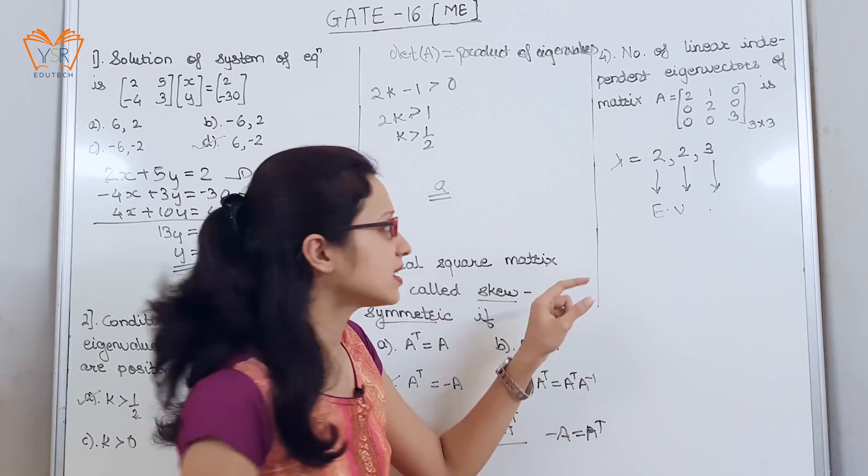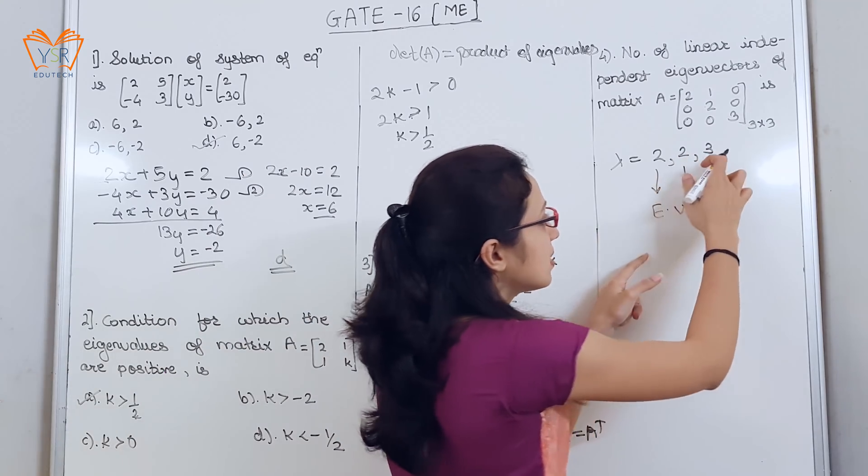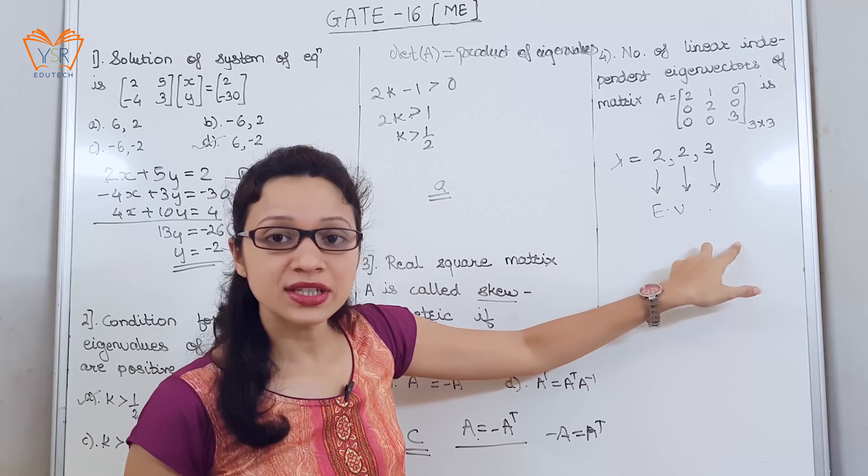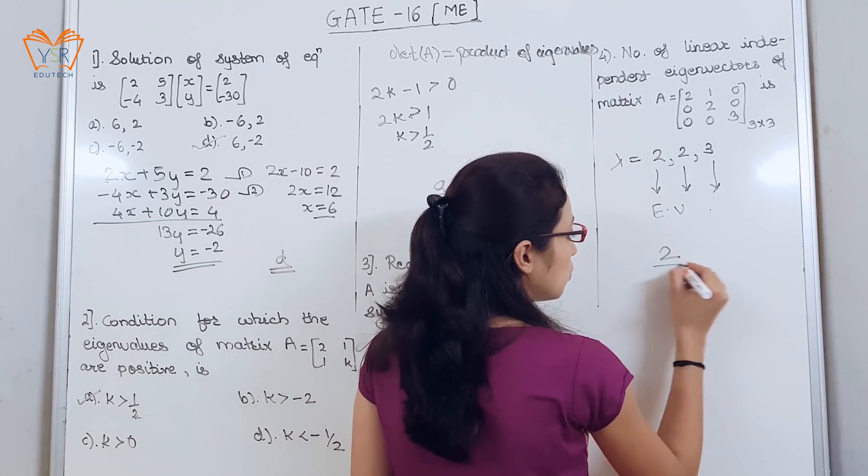So, we can say that 2 eigenvectors will be linearly independent. So, the answer is 2.